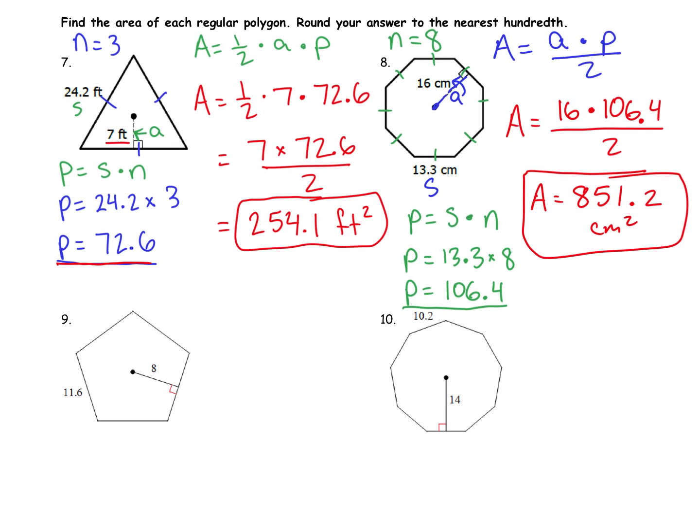So there's a little bit of added work to it. We're still dividing by 2. We're still multiplying two numbers. And we're already given the apothem. We just need to calculate the perimeter, identify the apothem, and then plug it in. So let's see what you've figured out so far. We're going to look at number 9.